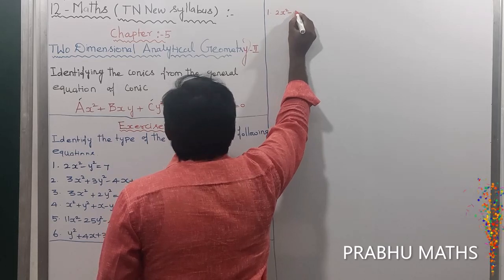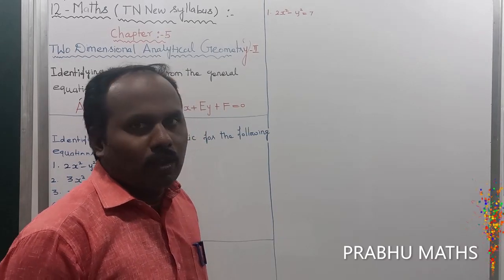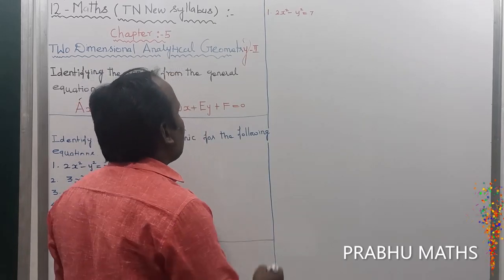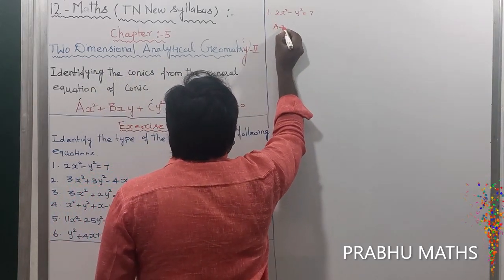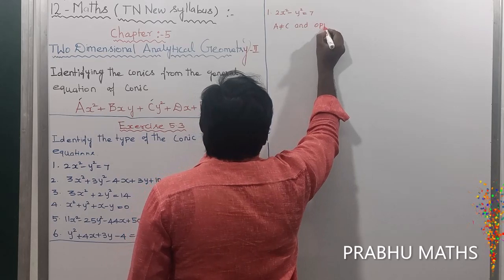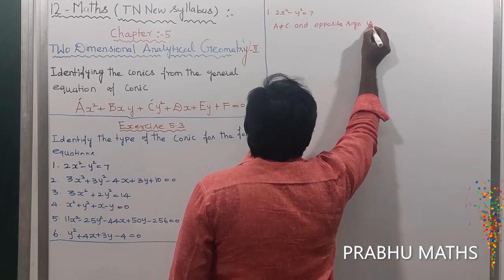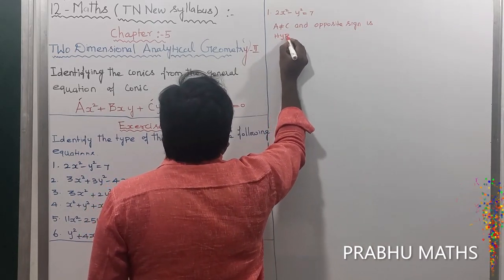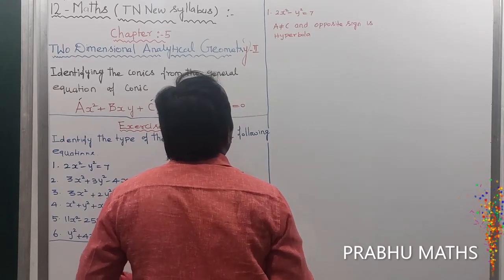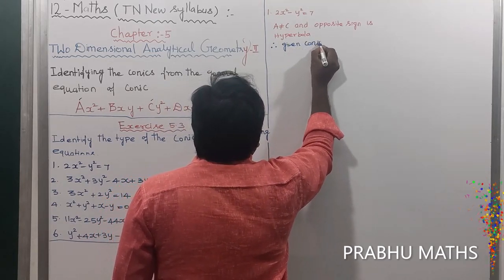First problem: 2x² - y² = 7. The coefficient of x² is a, and the coefficient of y² is c. Here a is not equal to c, and they have opposite signs. Opposite sign means this is a hyperbola. Therefore, the given conic section is a hyperbola.